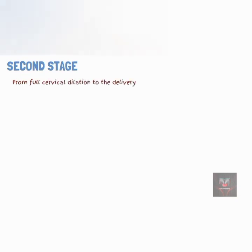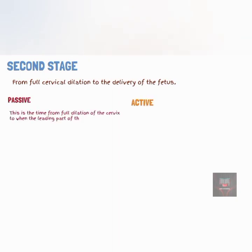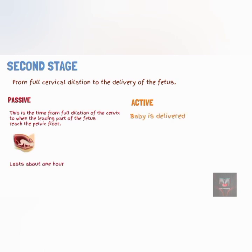The second stage of labor occurs from full cervical dilation to the delivery of the fetus. It is divided into the passive and active phase. The passive phase occurs from full cervical dilation to when the fetal presenting part reaches the pelvic floor, and lasts for a duration of 1 hour. The active phase occurs from the time when the fetal presenting part reaches the pelvic floor to the delivery of the baby, and also lasts for a duration of 1 hour.